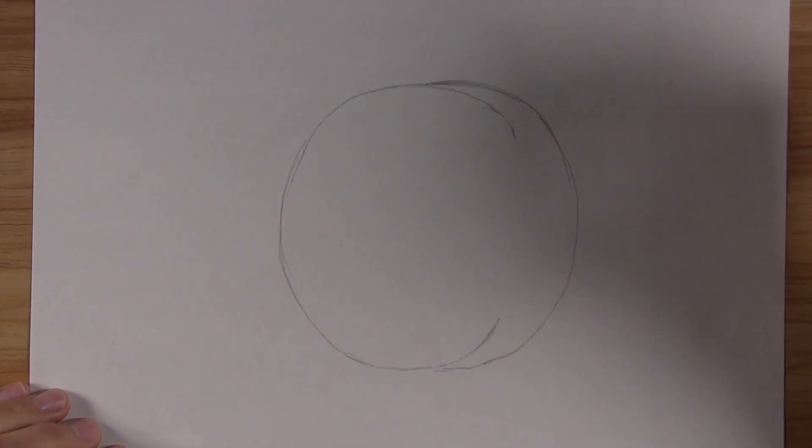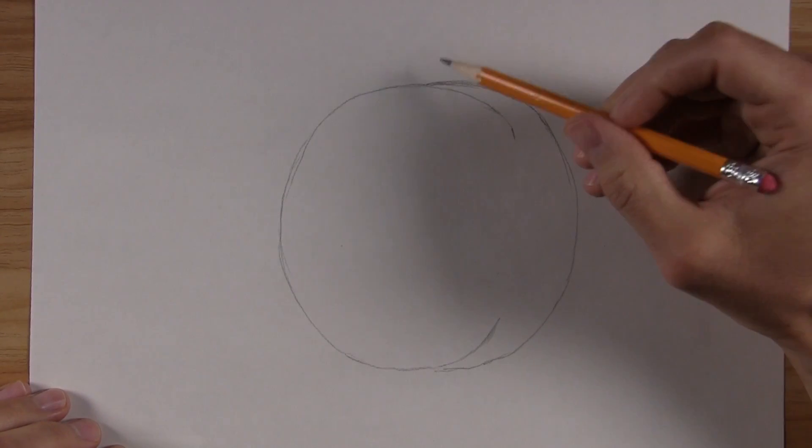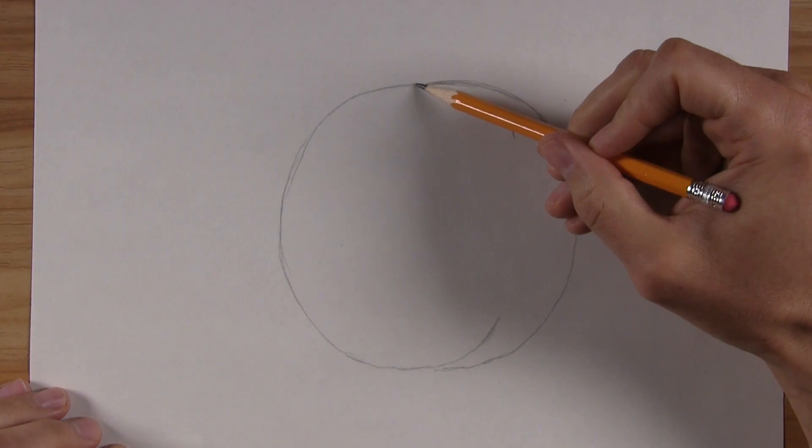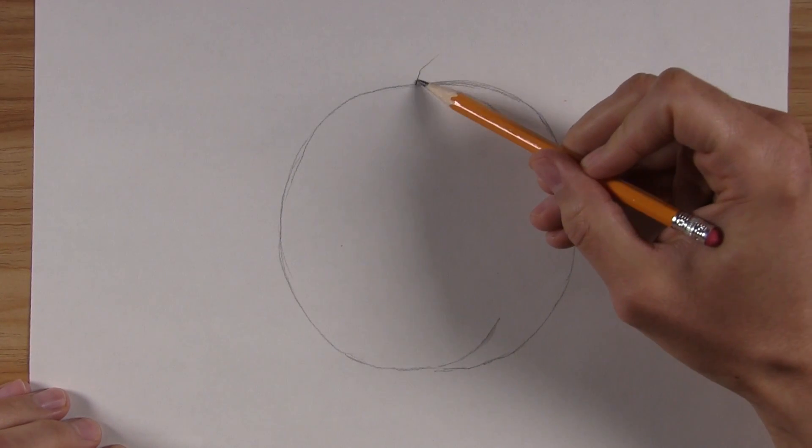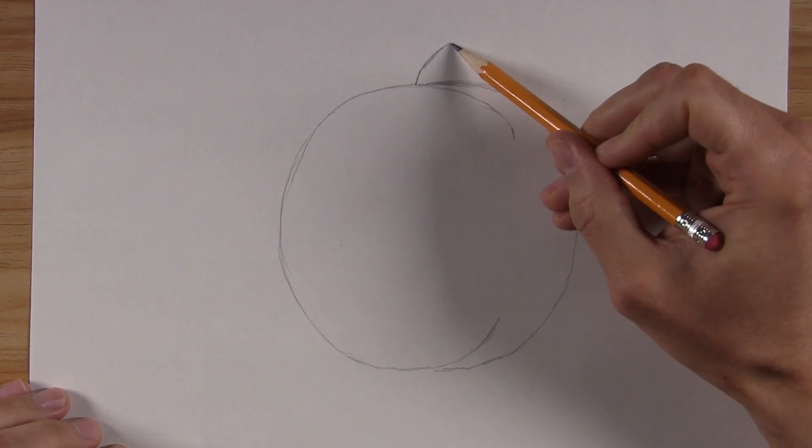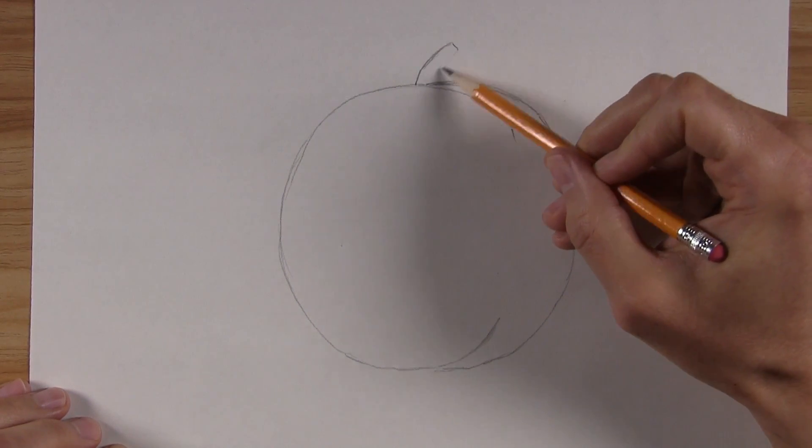Now draw another curved line to complete the outer edge of the peach. After that, draw a stem on the very top. You can make it slightly curved or bent, make it large or make it small. You decide because it's your peach and you can make it however you want.